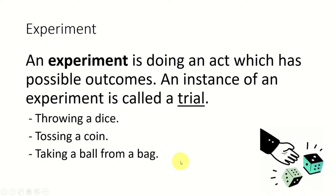Let's first look at what is meant by experiment. An experiment is doing an act which has possible outcomes. An instance of an experiment is called a trial. For example, simple experiments include throwing a dice, tossing a coin, or taking a ball from a bag. In the real world, it can be taking a product item randomly and checking whether it's of good quality, or picking a person and asking which candidate they are going to vote for in the next election.